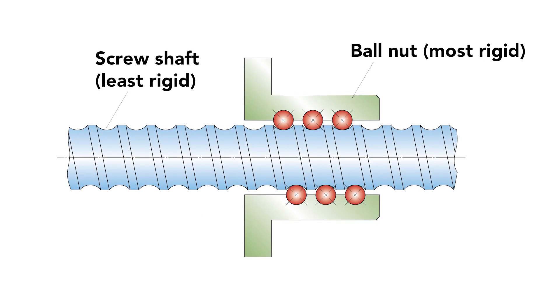The component with the lowest rigidity value tends to be the screw shaft, and based on the inverse nature of the equation, it has the largest influence on total system rigidity.